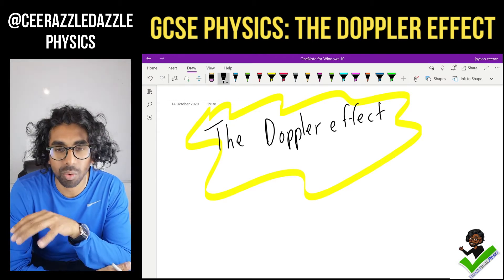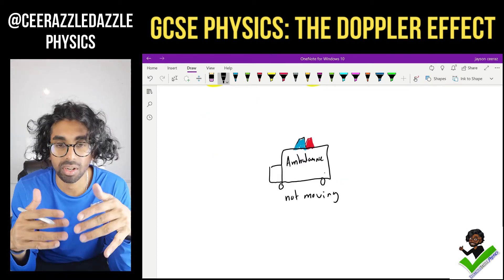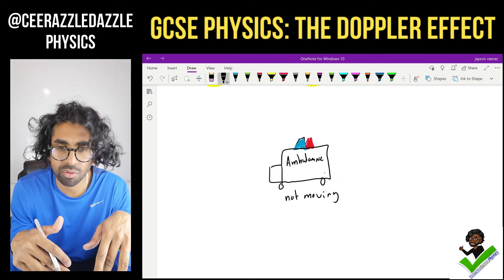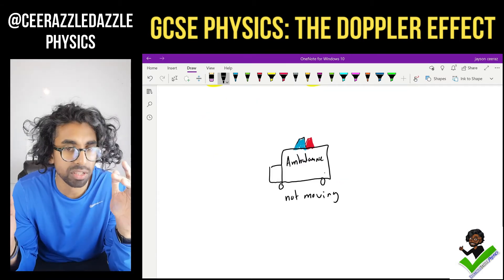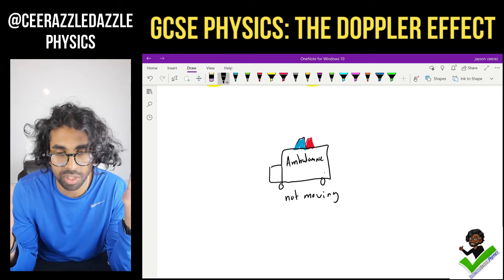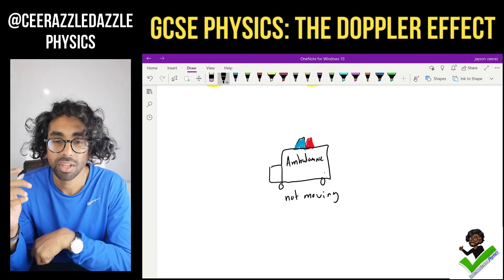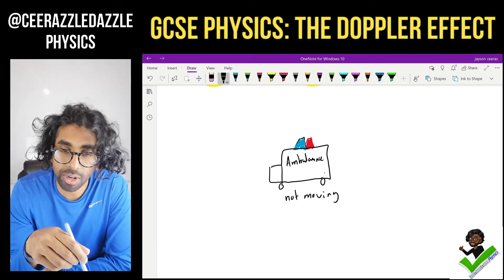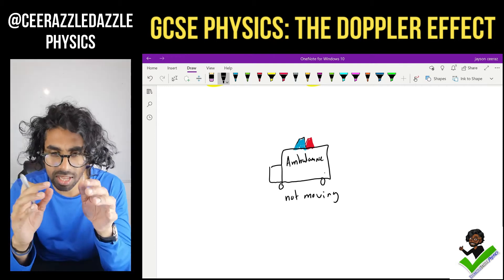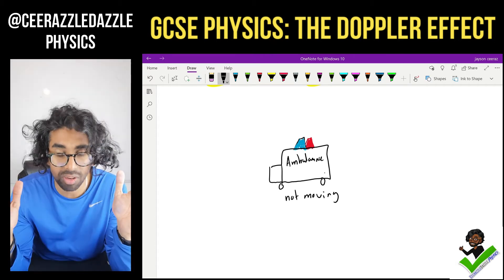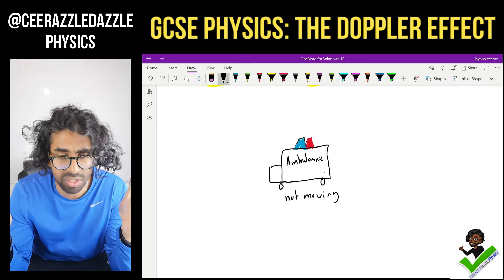So what exactly is the Doppler Effect? Let's look at this example. Here I've drawn an ambulance — it's not the best diagram in the world, my GCSE wasn't great in art, but it is what it is. So here we've got an ambulance and what's going to be happening is the ambulance will be emitting sound waves from it, obviously, because the siren's on.